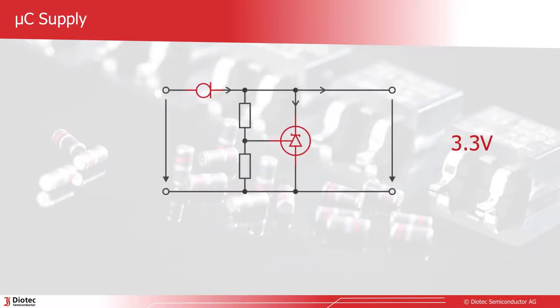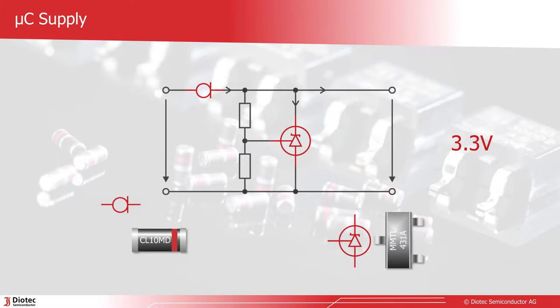The design idea shown here simply uses the CL10MD, a current limiting diode, and the shunt regulator MMTL431A. From an unregulated 9 volt input, these two devices form a precise and stable voltage supply for the microcontroller.